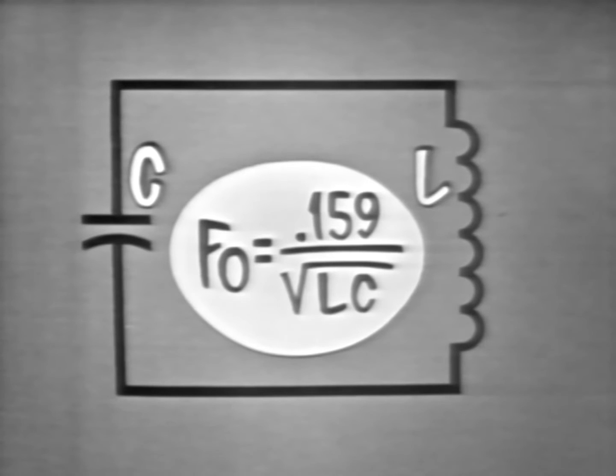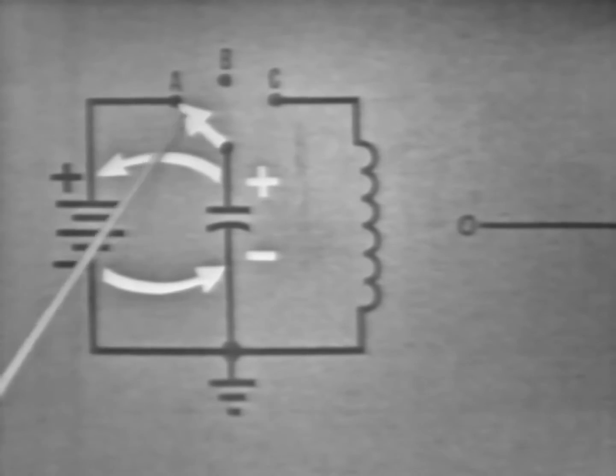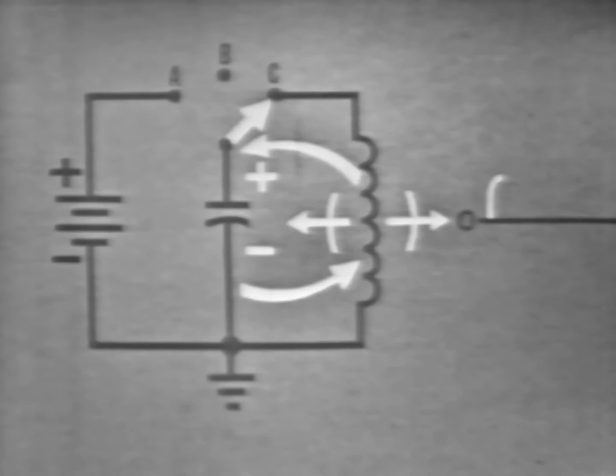Now to be sure you understand how this circuit will oscillate, let's follow the action step by step. First, we'll need a power supply to provide the initial energy. In this case, a battery. This switch will allow the capacitor to be connected to the battery or to the coil. If we flip the switch to A, the capacitor charges to the battery voltage. Move the switch to B, and the capacitor is disconnected from the power supply, though it is still fully charged. When the switch is moved to C, the capacitor will start to discharge through the coil, causing current to flow in this direction.